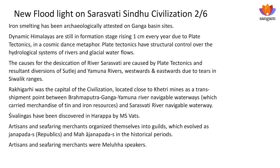Dynamic Himalayas are still in formation stage, arising one centimeter every year due to plate tectonics — a cosmic dance metaphor. Plate tectonics have structural control over the hydrological systems of rivers and glacial water flows. The causes for the desiccation of the river Saraswati — caused by plate tectonics and resultant diversions of the Satluj and Yamuna rivers westwards and eastwards due to tears in the Shivalik ranges — have been very clearly proven by researchers. Rakhigarhi was the capital of the civilization — more than 500 hectares, larger than Mohenjo-daro — located close to Khetri mines as a transshipment point.